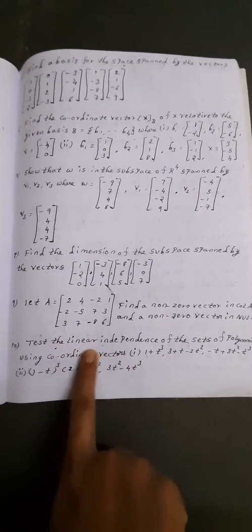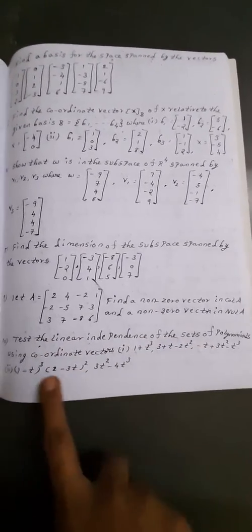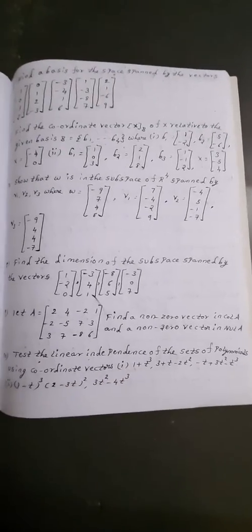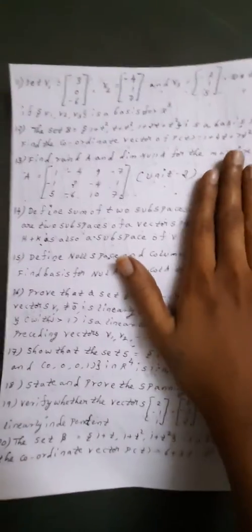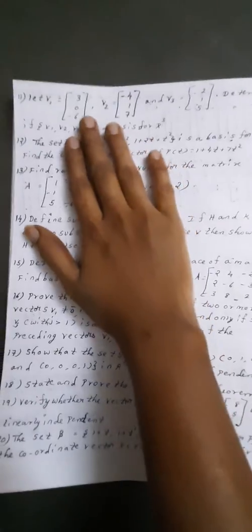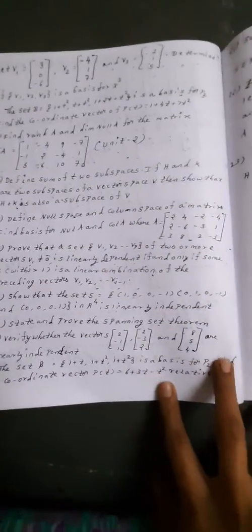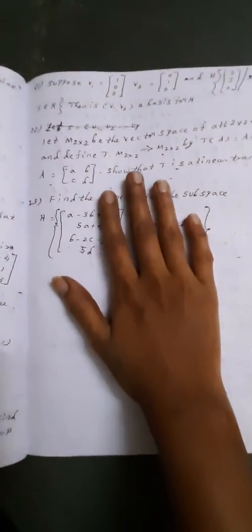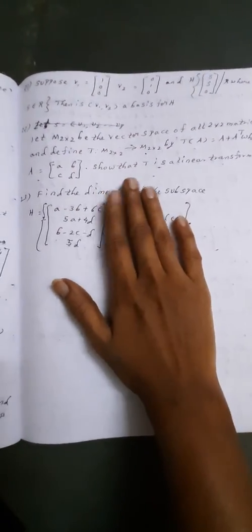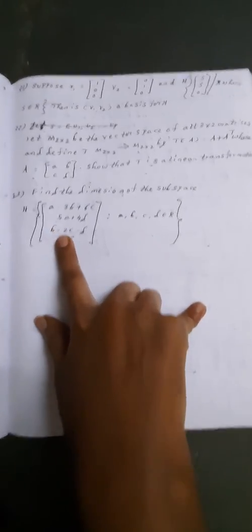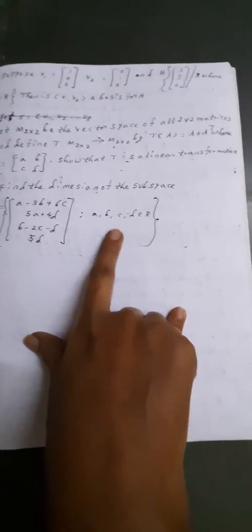Polynomials - test the linear independence of the sets. In the first unit, there are 23 questions, all important questions. See here, questions 11th, 12th, and up to 20th. Next, up to 23 questions. These are all the important questions for the first unit.